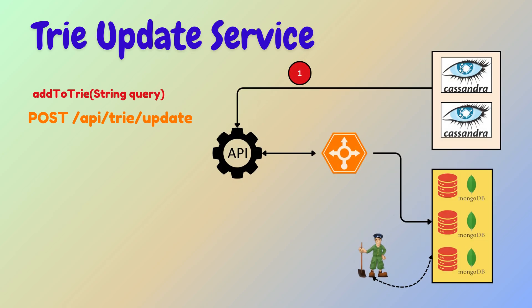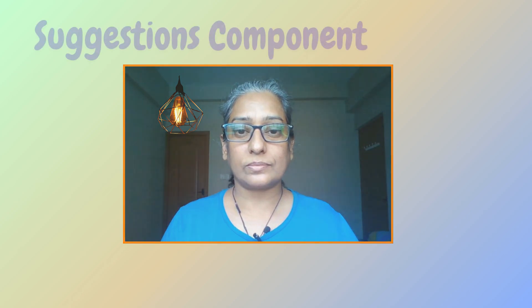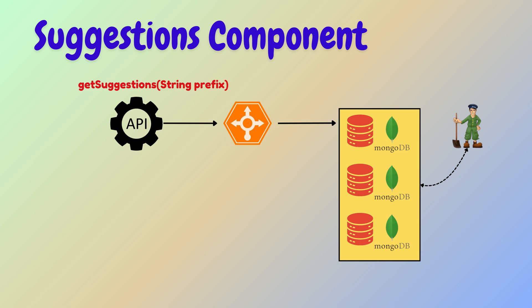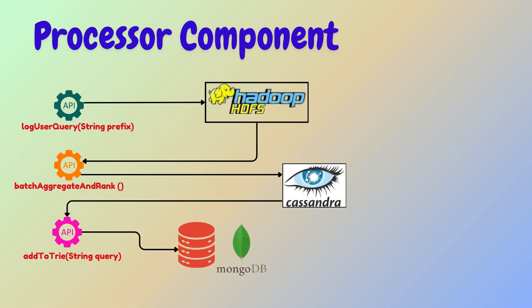The add-to-trie API adds new or frequent queries to the trie for future suggestions. The system is divided into two main components: suggestions and processor. The suggestions component calls the get suggestions API to provide relevant suggestions to users. The processor component handles background operations — managing query logs, aggregating, ranking them, and updating the trie — by calling the log user query, aggregate and rank, and add-to-trie APIs.